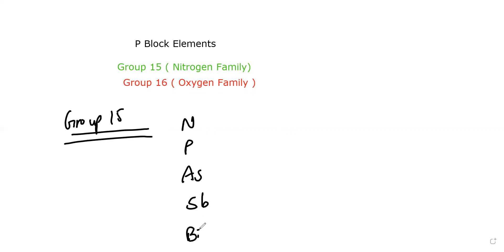Let us classify these elements. Nitrogen and phosphorus are both non-metals. Arsenic and antimony are both metalloids. And bismuth is a pure metal.